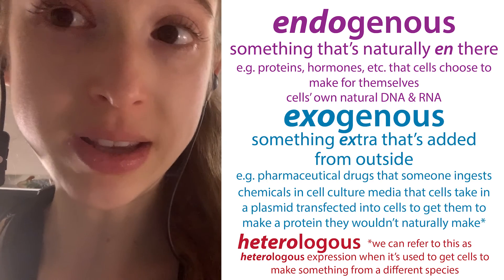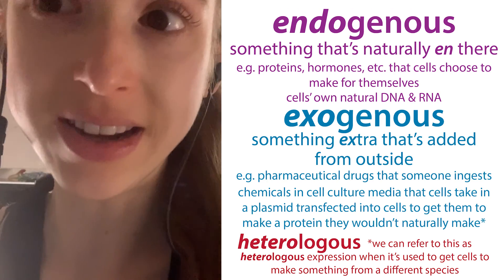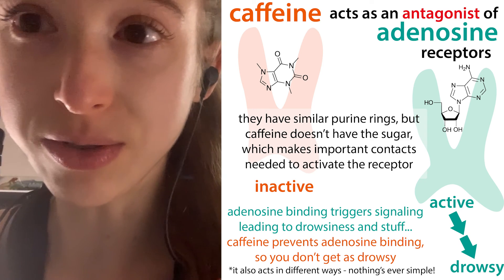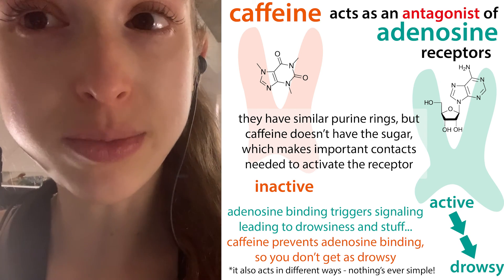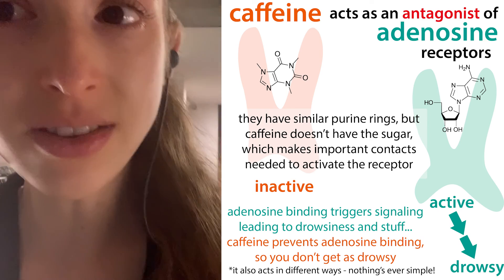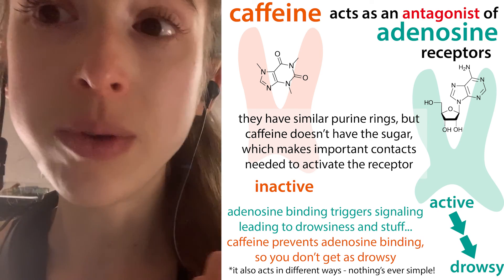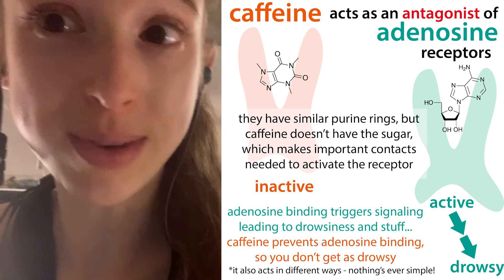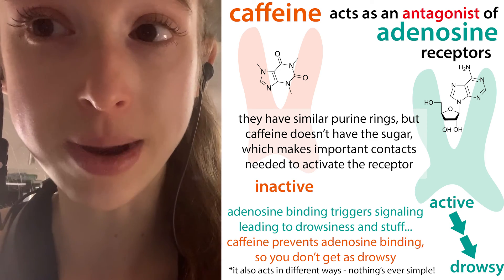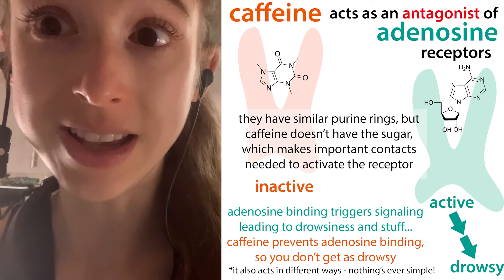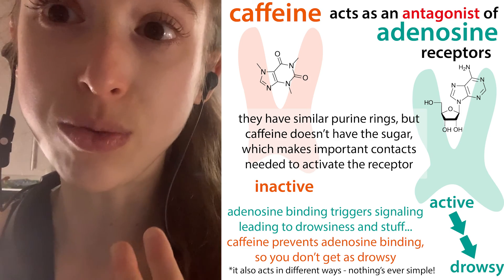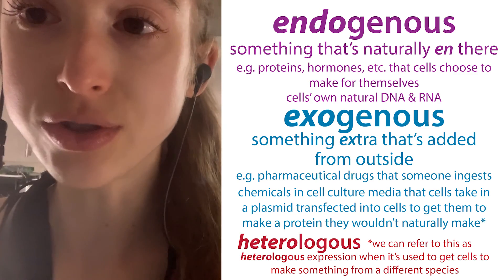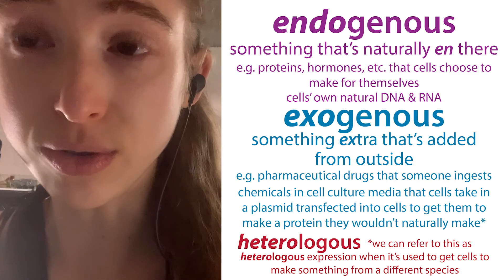We can describe ligands as endogenous — made by the body — or exogenous — taken in from outside. For example, adenosine made by our bodies to bind these receptors is endogenous, but doctors can also give adenosine exogenously to slow down heart rate. Caffeine is always exogenous since our bodies can't make it. And you can also have exogenous things that aren't natural products but are pharmaceutically designed drugs.